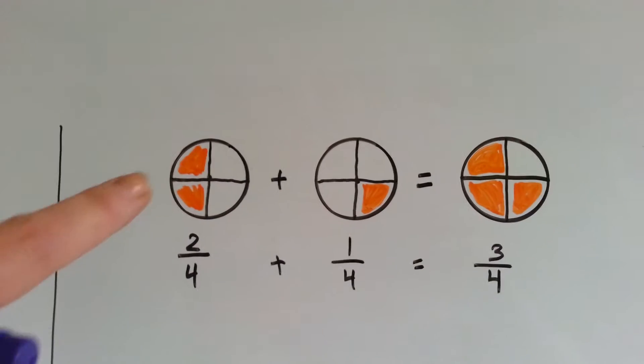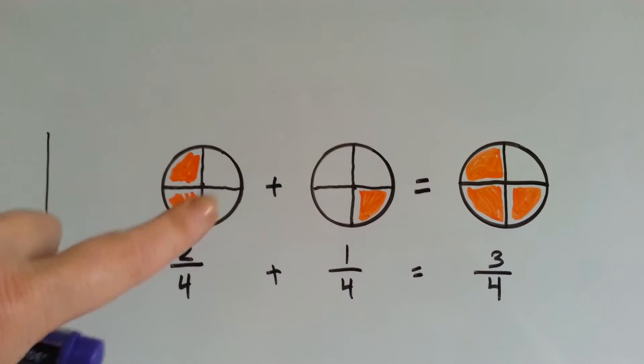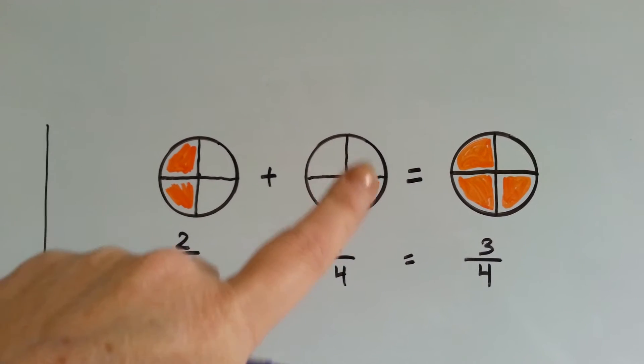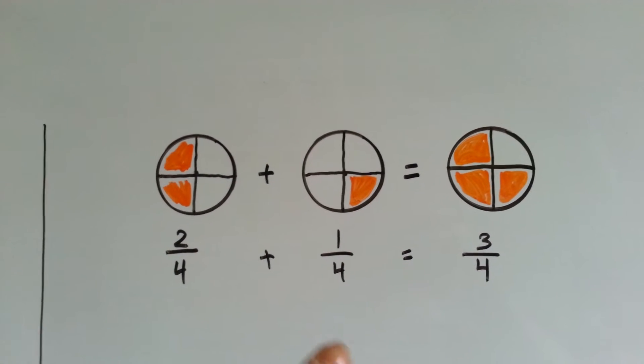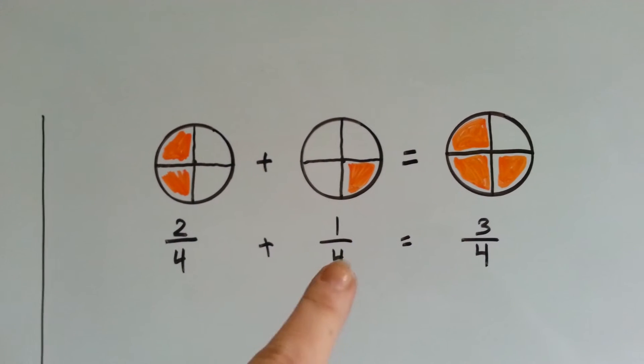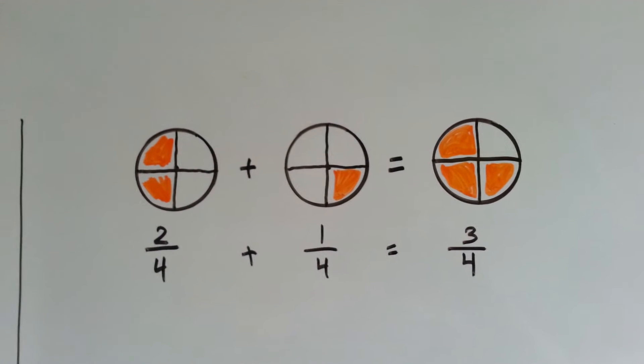We've got a circle cut into 4, and 2 are orange, and this circle cut into 4, and 1 is orange. So, this is 2 fourths, this is 1 fourth. When we add 2 fourths to 1 fourth, we get 3 fourths.